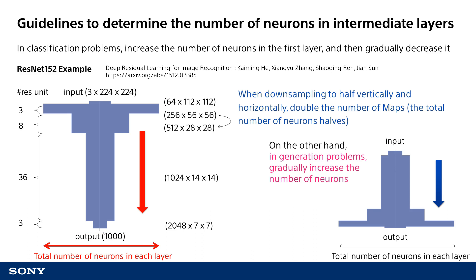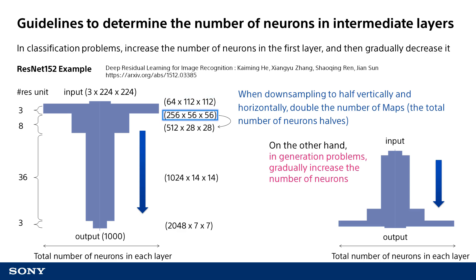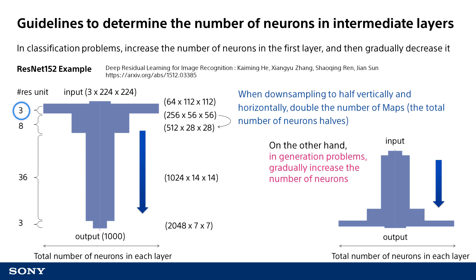The number of neurons from input to output is represented horizontally in the graph. Convolution is used immediately after the first input and 64 images measuring 112 by 112 pixels are processed. After the images undergo max pooling and are processed to 56 by 56 pixels, convolution is used to process them to 256 images measuring 56 by 56 pixels. One Res unit is a three-layer convolutional neural network, and there are three units of 256 by 56 by 56 — a nine-layer convolutional neural network.